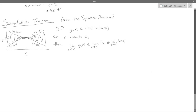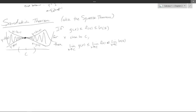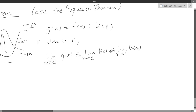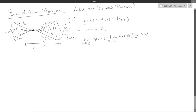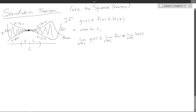It doesn't need to be true everywhere — they may switch places elsewhere. When I say close to c, I just mean in some open interval around c. If you want to be technically correct, you'd say there exists an open interval containing c such that all x's in the interval satisfy this inequality. A lot of times you'd make a delta neighborhood, then say all values within a small distance from c.